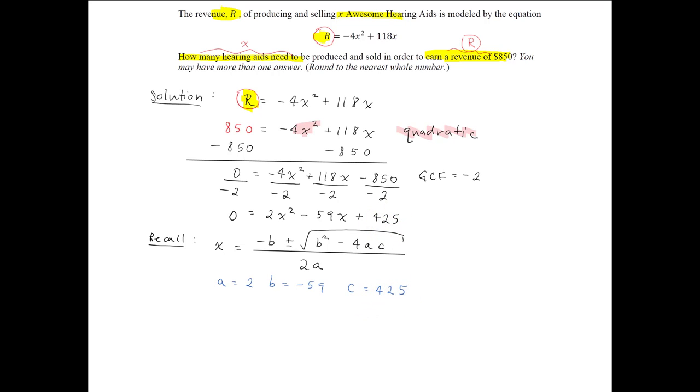Let's plug these coefficients into the quadratic formula. So x is equal to negative b, and here we have to be very careful with our negatives. So negative negative 59, plus or minus the square root of b squared, negative 59 squared,